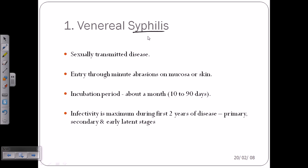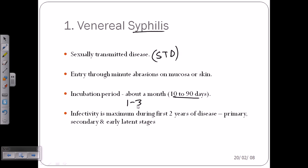The first is venereal interaction, and the disease is called syphilis — a sexually transmitted disease (STD) that produces some of the most dangerous symptoms among all STDs. This bacteria enters through abrasions of the mucosa or skin. Any kind of wound, burn, or injury allows entry, and they require an incubation period of about 10 to 90 days — roughly one to three months.